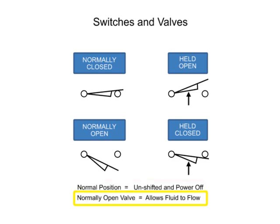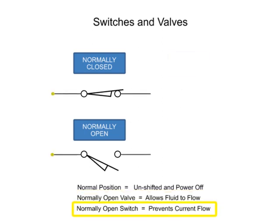While a normally open valve allows fluid to flow, a normally open switch prevents current from flowing. Electrical current can flow across the switch as long as both sides are touching contactors.